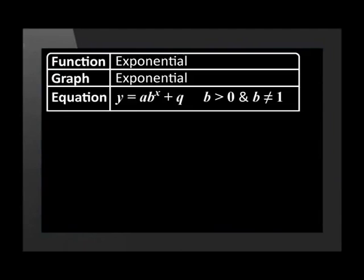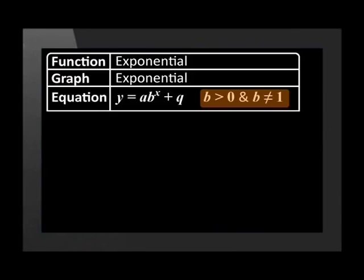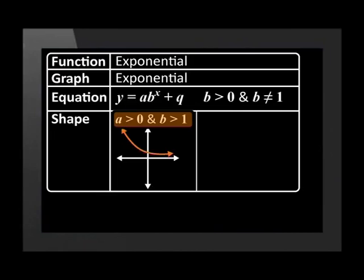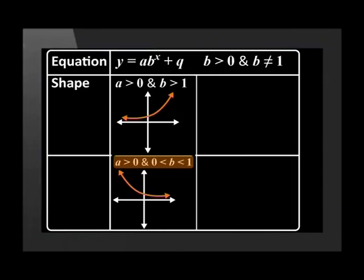Now we have one last function to revise — the exponential function. The exponential graph has the standard equation y equals a times b to the power of x plus q. Remember that b must be positive and cannot equal 1. The values of a and b determine the shape of the graph and whether it lies above or below the asymptote, which is y equals q. If a is positive and b is greater than 1, the graph is increasing and above the asymptote. If a is positive but b lies between 0 and 1, the graph is decreasing and lies above the asymptote.